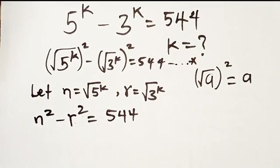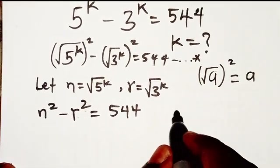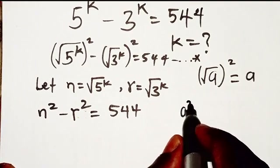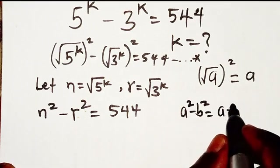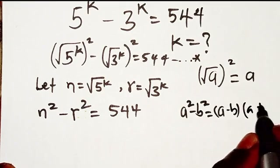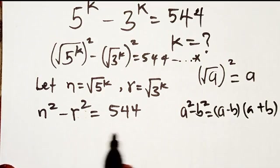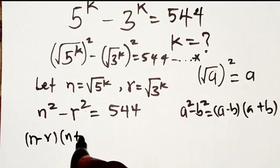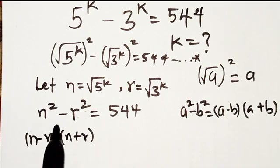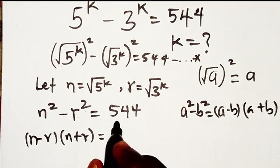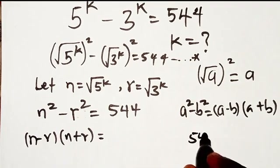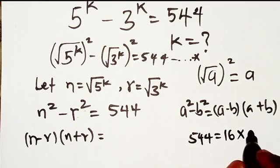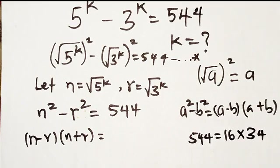Now the left-hand side is in the form of a difference of two squares. When you have a² minus b² you rewrite it as (a - b)(a + b). So I'm going to apply the same thing here: (n - r)(n + r) equals 544. Now let's factorize the right-hand side — 544 can be expressed as the product of 16 and 34.